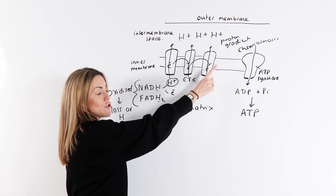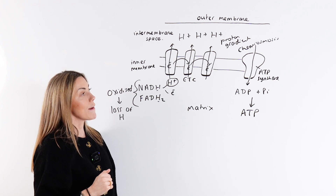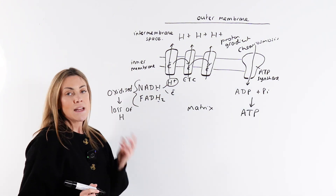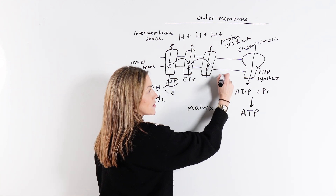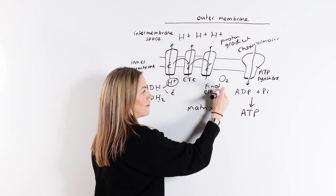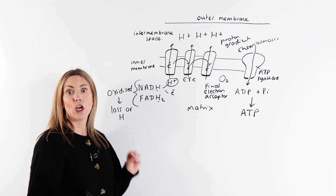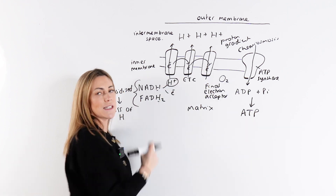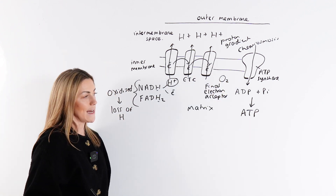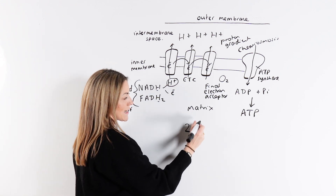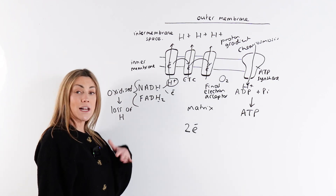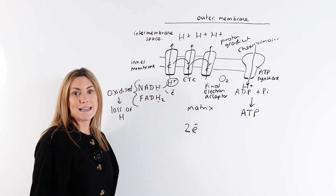To summarize so far: the transfer of electrons down the electron transport chain drives the pumping of protons into the intermembrane space, forming a proton gradient. Chemiosmosis then drives the production of ATP from ADP and inorganic phosphate. Oxygen is required for oxidative phosphorylation because oxygen acts as the final electron acceptor. Once the electrons reach the last protein in the electron transport chain, they are passed to oxygen. Oxygen also accepts protons — those that diffuse back through the channel in the ATP synthase enzyme.